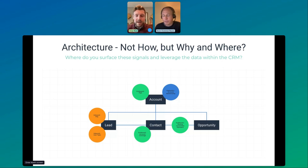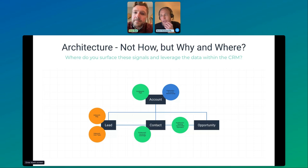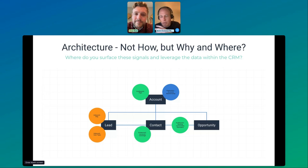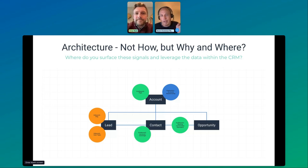We had a higher threshold there because our primary persona was a developer. As we know, when your primary audience is developers, you don't want to approach them aggressively. Where you set that threshold has a lot to do with who your primary audience and decision makers are — and that informs the modeling and cutoff level where you would actually engage the account from a product-led sales perspective.